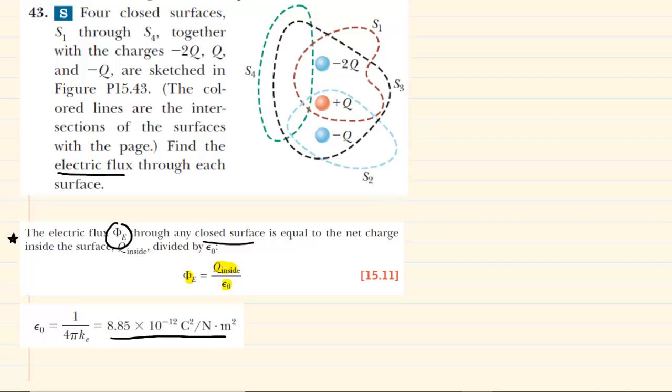Let's take a look at surface labeled S1. You can see S1 is delineated by this dotted outline right here. And for S1, if we're going to calculate the total net electric flux, then all we need to do is figure out the total amount of charge inside of that dotted surface.